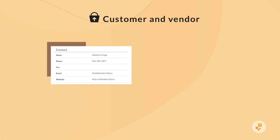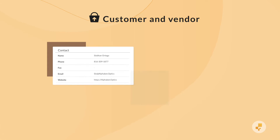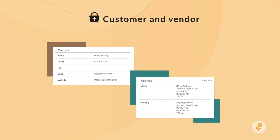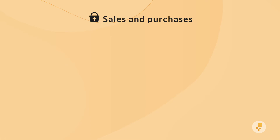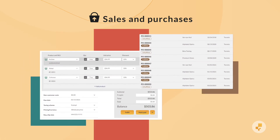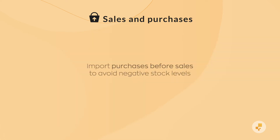Customer and vendor imports are simple. You'll want to have records about the people you buy from and the people you sell to in Inflow. Inflow can also import your existing sales and purchase orders. When importing orders, we suggest doing the purchase orders first and then the sales orders second to prevent your inventory from going negative.